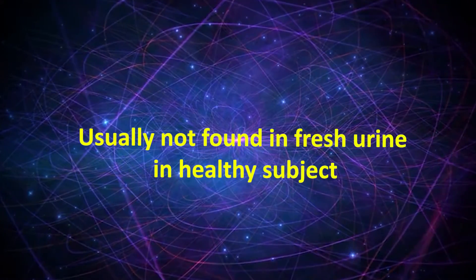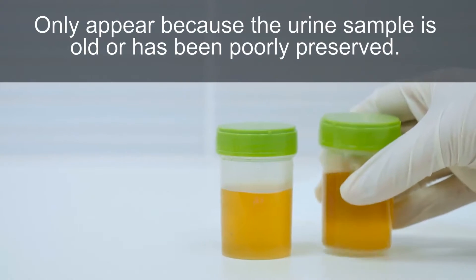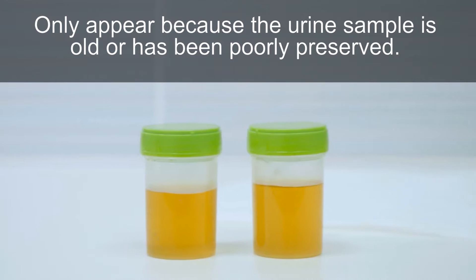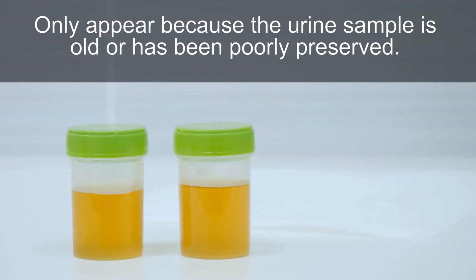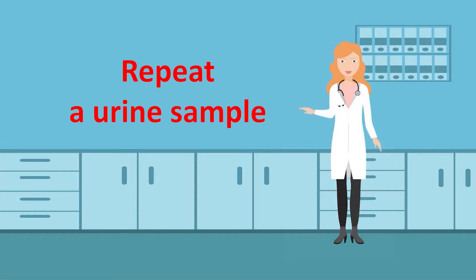Usually, it is not found in fresh urine in healthy subjects. Sometimes, ammonium biurate crystals only appear because the urine sample is old or has been poorly preserved. Therefore, repeat urine sample may be advised if these crystals appear.